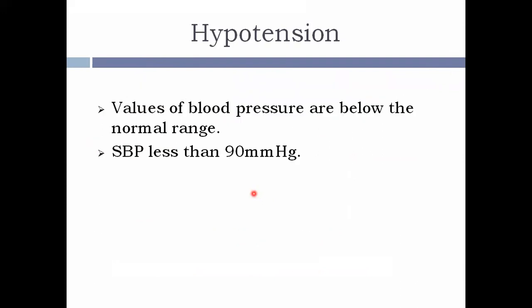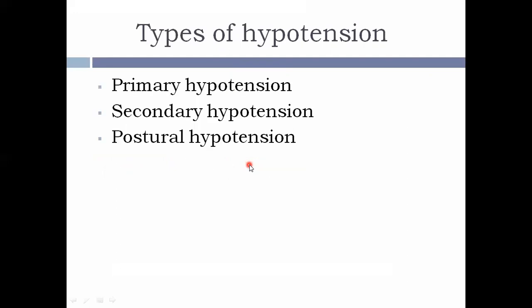The next pathological variation is hypotension. When blood pressure is below the normal range — specifically when systolic blood pressure is less than 90 mmHg — it is termed hypotension. Types of hypotension: primary or essential hypotension is not due to any underlying disorder; the cause is idiopathic. Secondary hypotension is due to underlying disorders like neurogenic or hemorrhagic shock, and hypoactivity of the pituitary gland or adrenal gland.